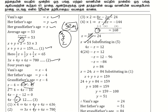Now that x equals 24, we substitute into equation 3: 4x minus z equals 12. So 4 times 24 minus z equals 12, giving 96 minus z equals 12. Rearranging, z equals 96 minus 12, so z equals 84. We now have x equals 24 and z equals 84.